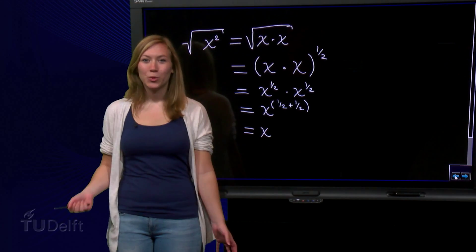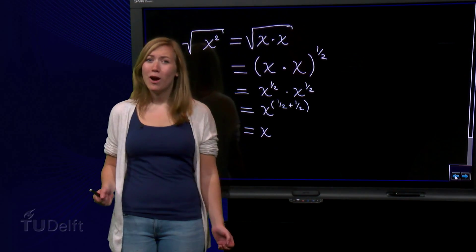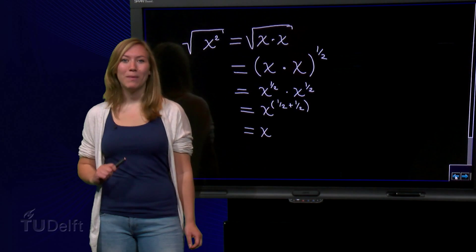We conclude that the square root of x squared is x, but this is wrong. Why? Well, let's take x equals minus 1.